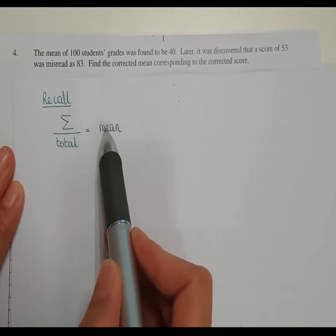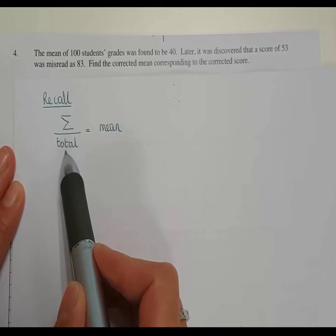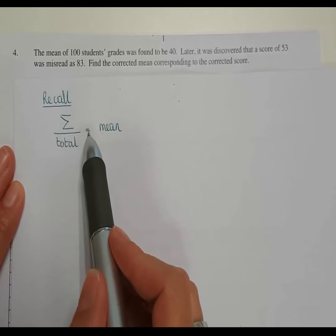Recall the formula to find the mean: we do the sum of all the numbers divided by the total. The total here is 100 to find the mean.